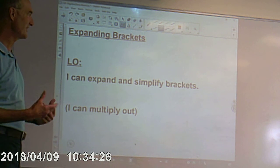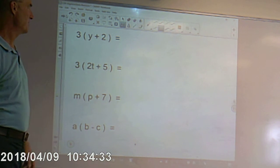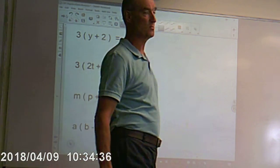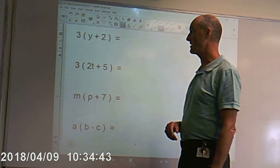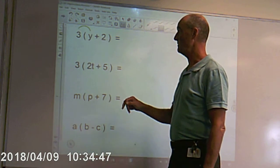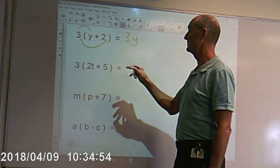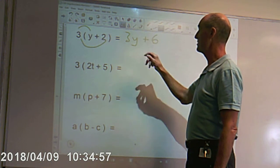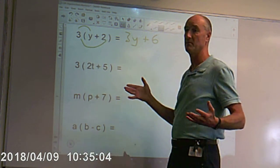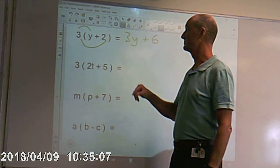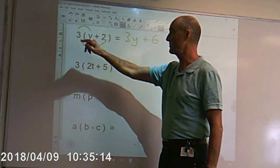Expanding brackets. 3 and then a bracket, y plus 2 — what happens when we expand that bracket out? Everything inside the bracket must be multiplied by what you've got outside the bracket. So, in this case, 3 times y is 3y. What is 3 times 2? It is 6. So, there we've expanded the bracket. Everything inside the bracket has been multiplied by what is outside the bracket. At the moment, we haven't got a value for y, so that's the best we can do.